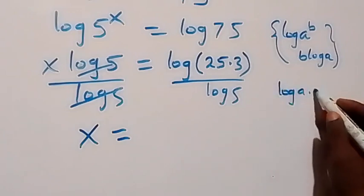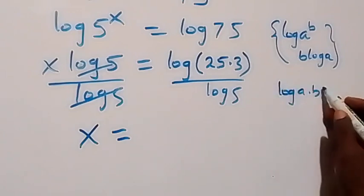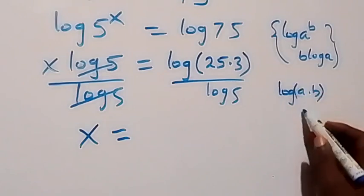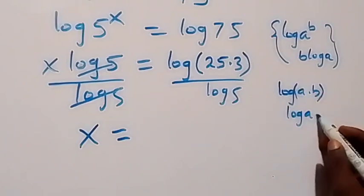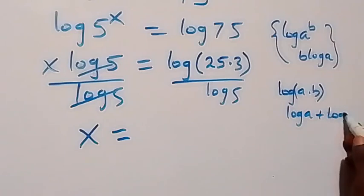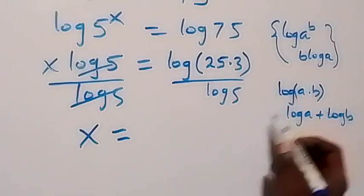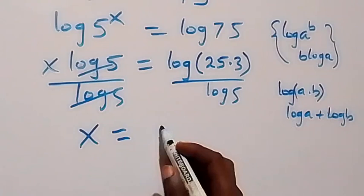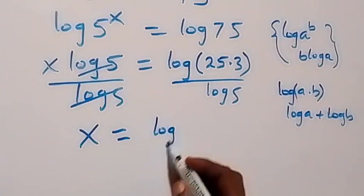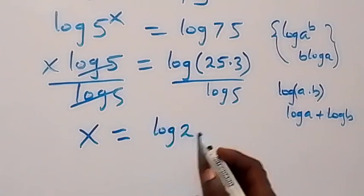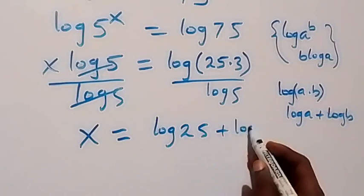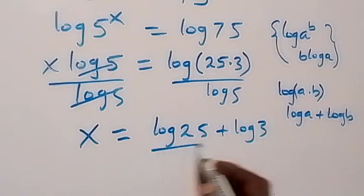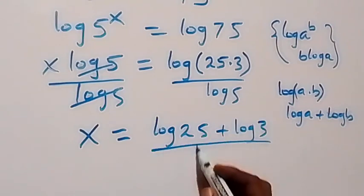Then we can separate this using the log rule: log(a times b) equals log a plus log b. So from here we can write this now as log 25 plus log 3, then over log 5.